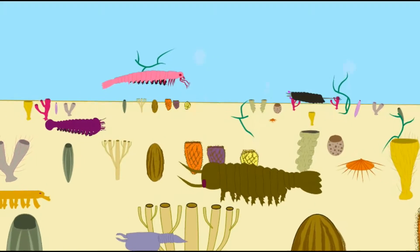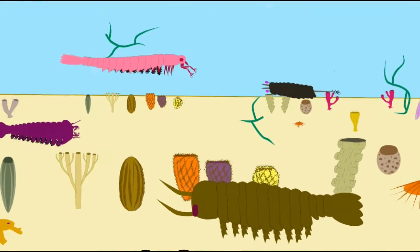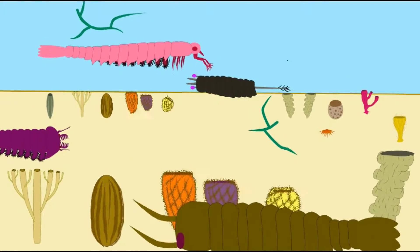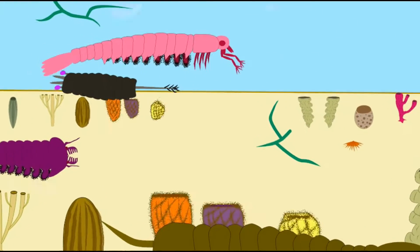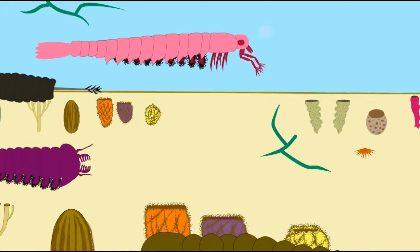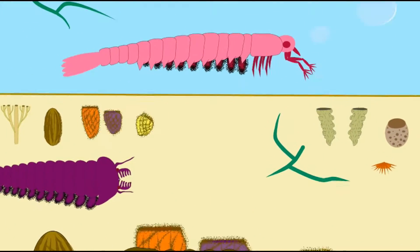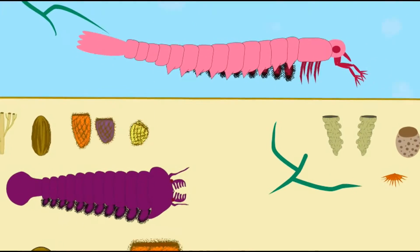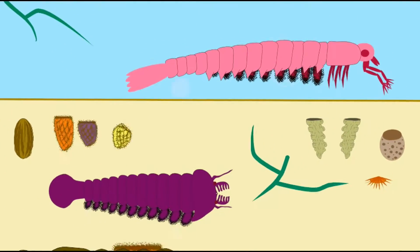There were different groups of sponges, and a major group were the Archaeocyathan sponges, which were predominant members of early Cambrian reefs but which became completely extinct by the middle Cambrian.